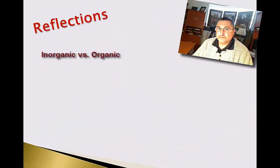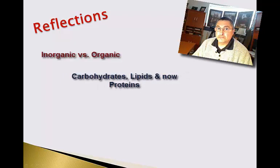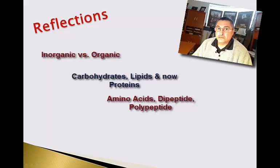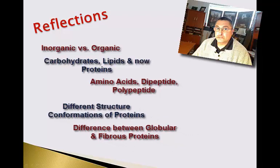Now it's time to reflect. Think about the differences between inorganic and organic chemistry, the different types of organic molecules — carbohydrates, lipids, and proteins. Review the building blocks of proteins, which are amino acids, and the different types of amino acids. Consider what polypeptides and proteins are, the difference between globular and fibrous proteins, what enzymes are, what denaturation is, and the difference between reversible and irreversible denaturation.